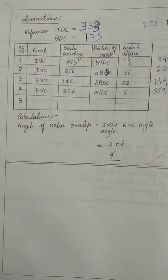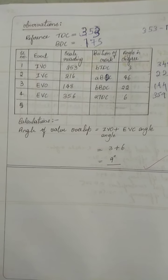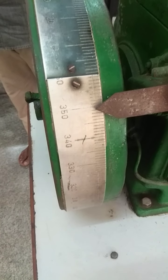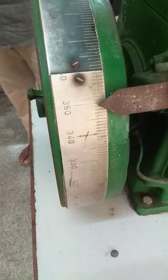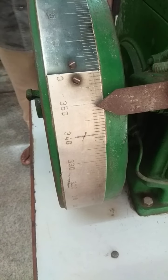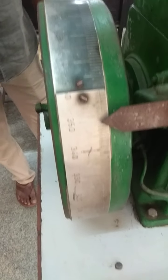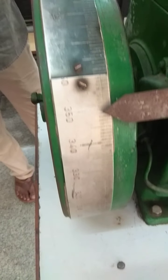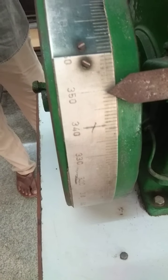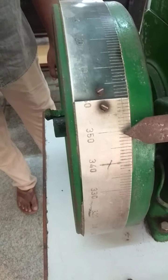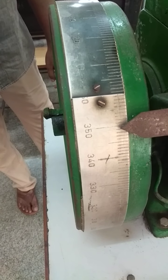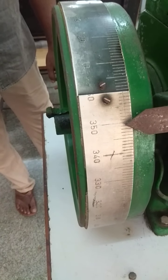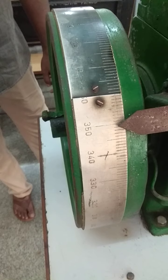You have to note this in the tabular column. These are the graduations on the flywheel. On this wheel there are different angles, and these graduations represent angle. There are a total of 360 degrees.